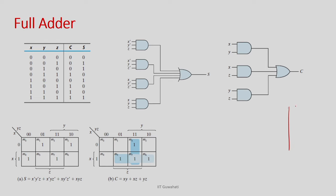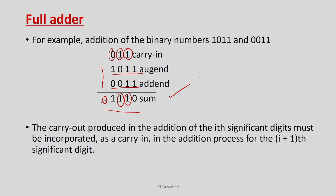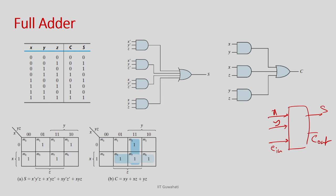So instead of the half adder, we are interested in the full adder. Effectively you have 3 inputs — x, y, and a carry in — and you get output sum and carry out. If I have this I can add them in a chain to perform multi-bit addition. This is called the full adder, which effectively does a 3-bit addition.